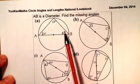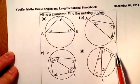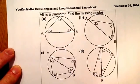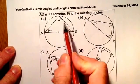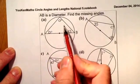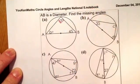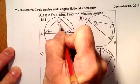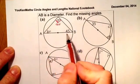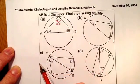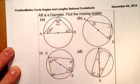Let's look at question A. We've got AB as the diameter and we're finding the missing angles. I know that there's an angle in a semicircle, so this is going to be 90 degrees. With the angles in the triangle adding up to 180, that's going to give me 45 degrees for the remaining angle.